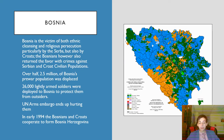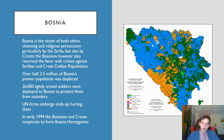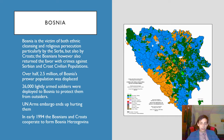Bosnia is traditionally seen as the victim of this conflict, and it's partially true because they're sandwiched between Croatia and Serbia, who both are going after them. They're not entirely innocent either — no party is basically entirely innocent in this affair. Bosnians were recruiting jihadists worldwide, and they too were massacring Serbs within Bosnia. But they are the worst off: at the end of the war, about half their population had been displaced.